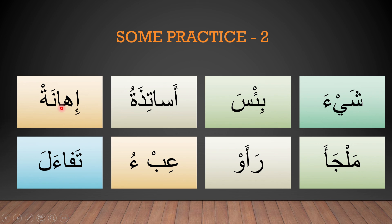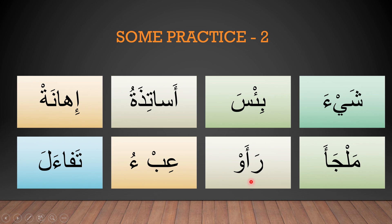Hamza-kasra: I. Ha-alif: Ha. I-ha. Nun-fatha, cha-ta-sukun: Na. I-ha-na. Nun-fatha, cha-ta-sukun: Na. I-ha-na. Mim-fatha, lam-sukun: Mal. Jim-fatha: Ja. Mal-ja. Hamza-fatha: A. Mal-ja-a. Ra-fatha: Ra. Hamza-fatha, ba-sukun: Aw. Ra-aw.